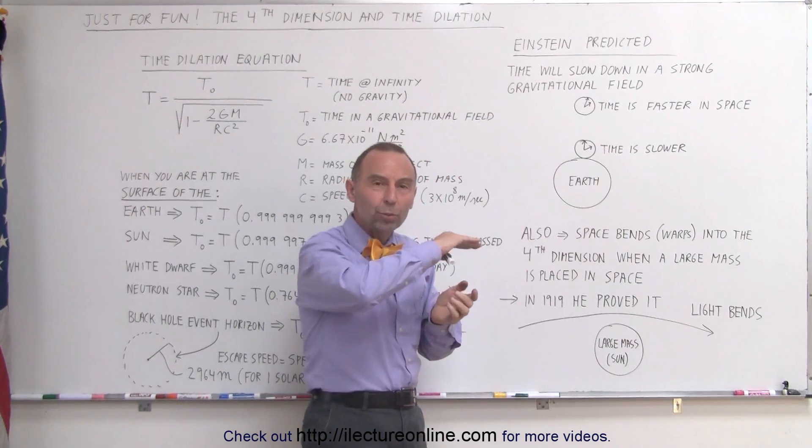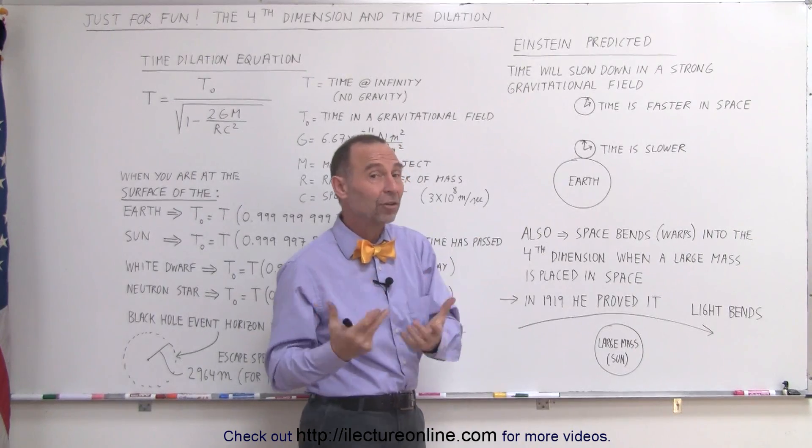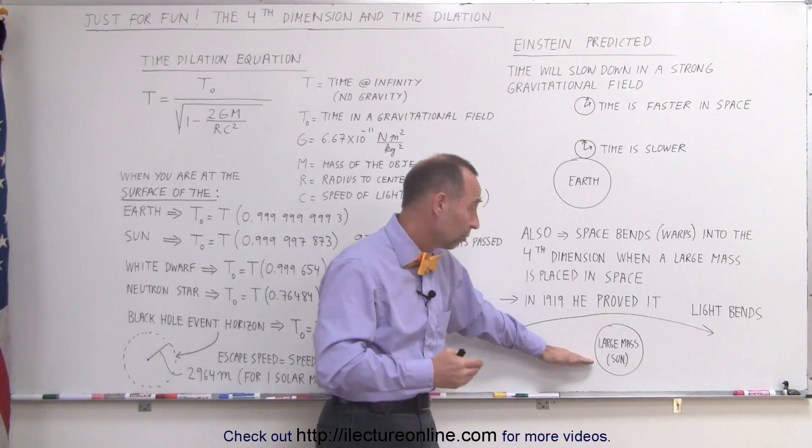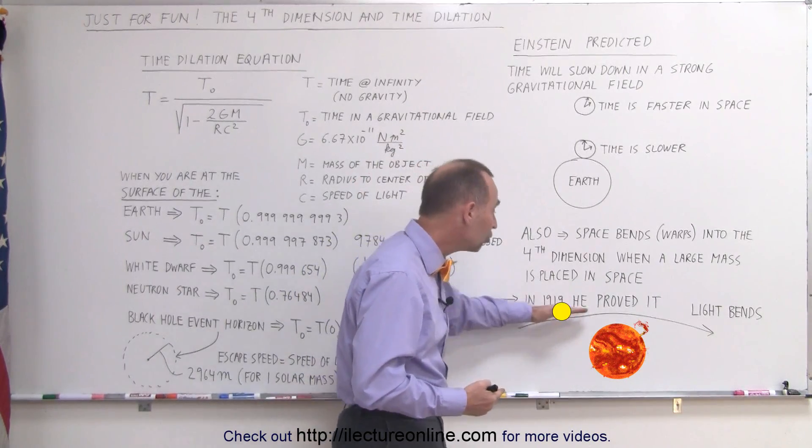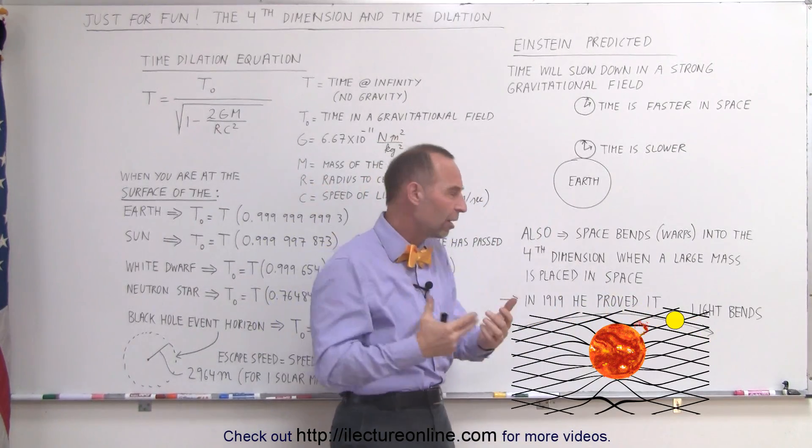He also predicted that light would bend. Light is affected by gravity, which of course nobody believed, but he actually proved. And he proved that when light goes by an object, such as the sun, for example, which has a large mass, light would actually change direction. It would be changed by the gravitational force caused by the sun.